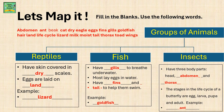The other three groups of animals are reptiles, fish, and insects. Reptiles have skin covered in dry scales. They lay eggs on land. An example is a lizard.